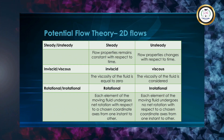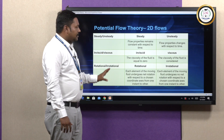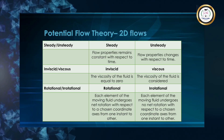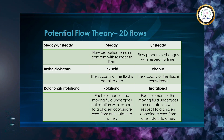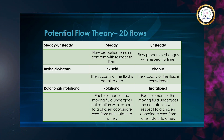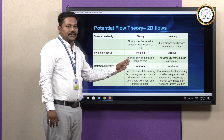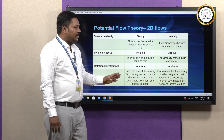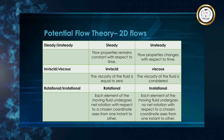In potential flow theory, according to 2D flows, we need to define flow properties. Flow properties that remain constant with respect to time is a steady flow. Flow properties that change with respect to time is unsteady flow. Inviscid means the fluid does not possess friction. The fluid that possesses friction is called a viscous fluid.